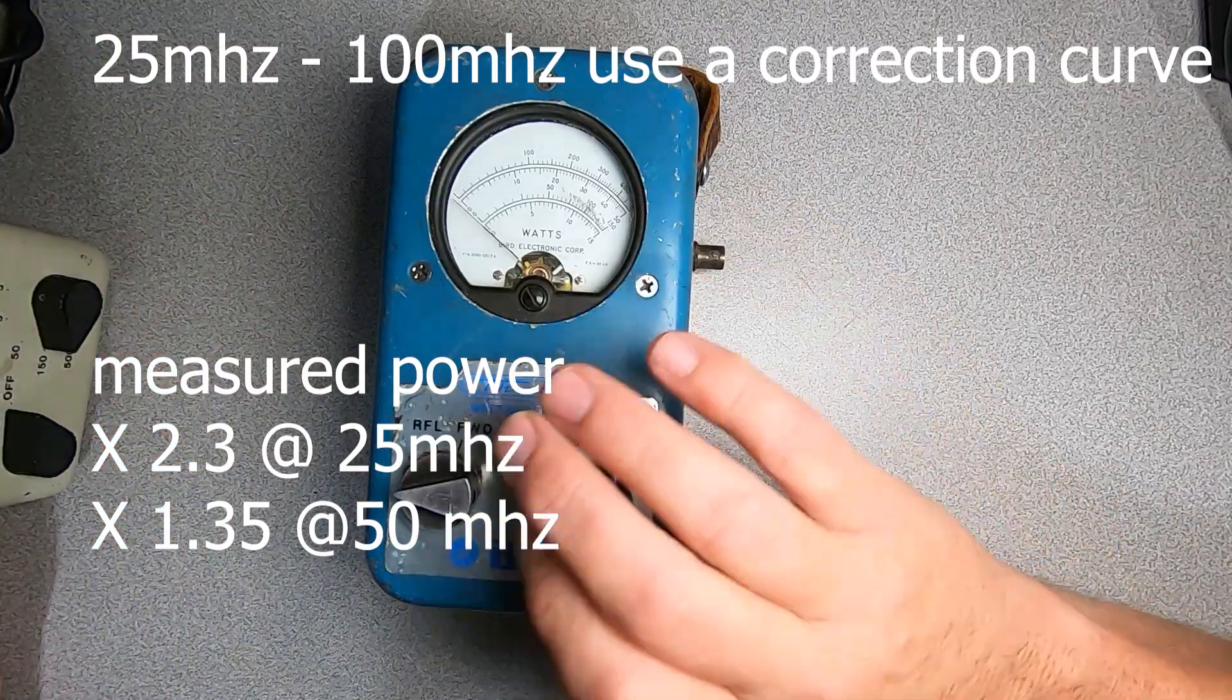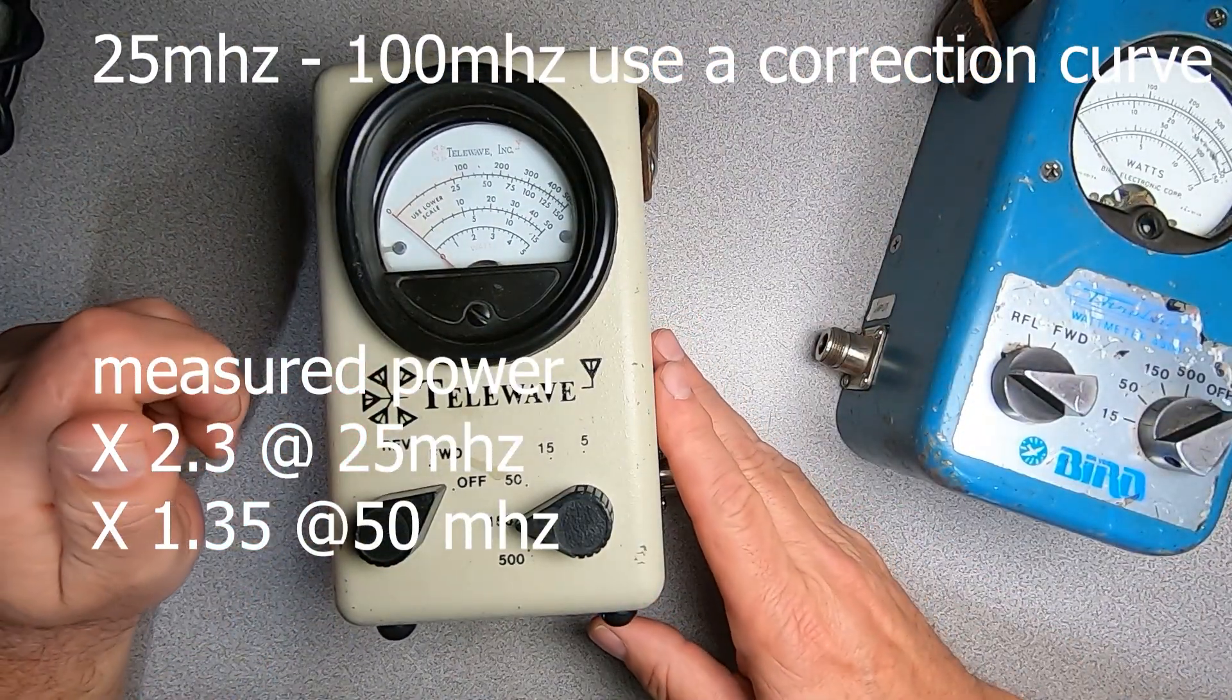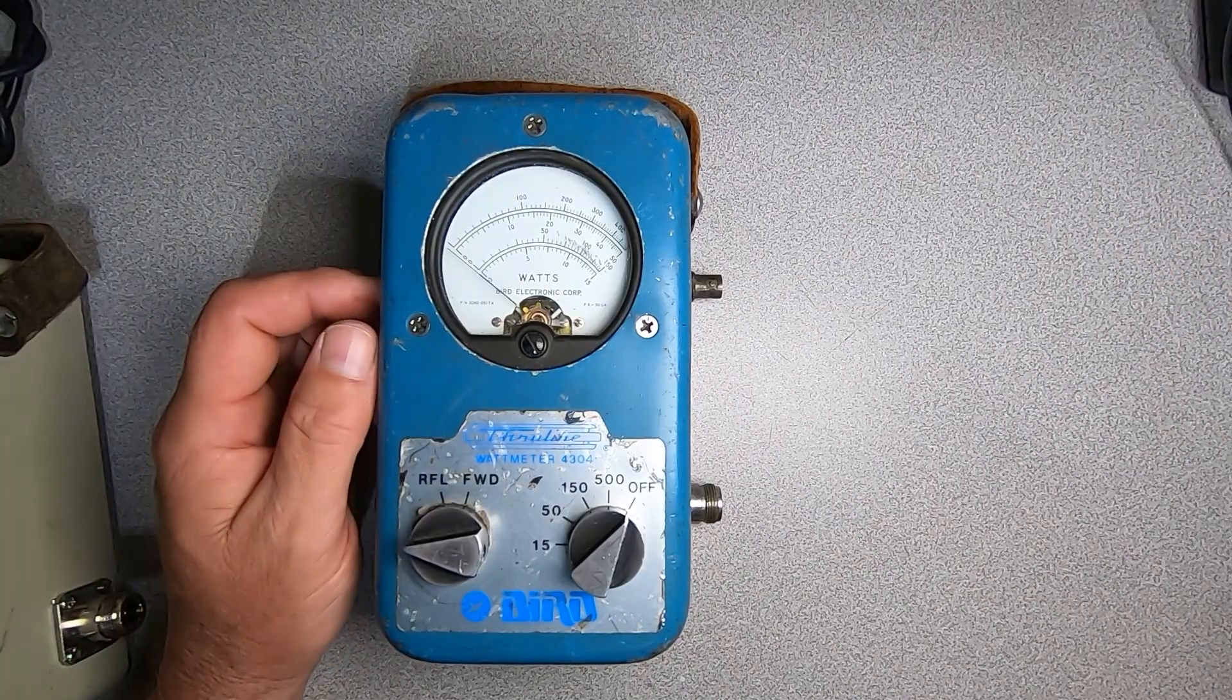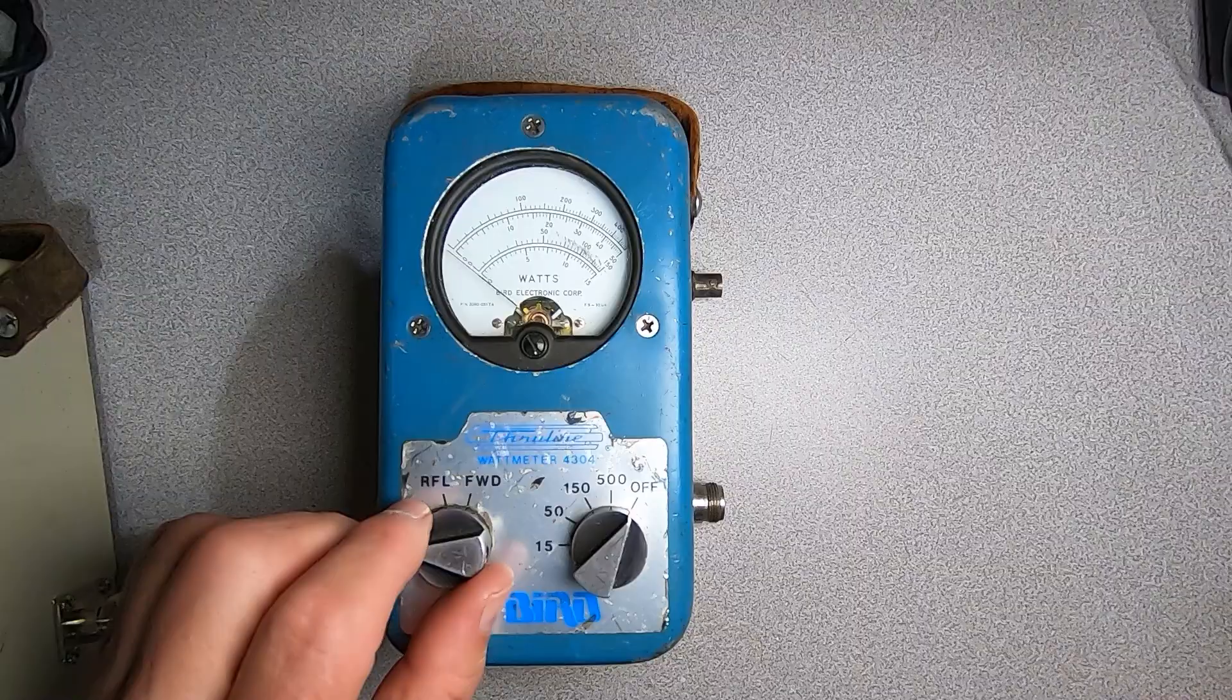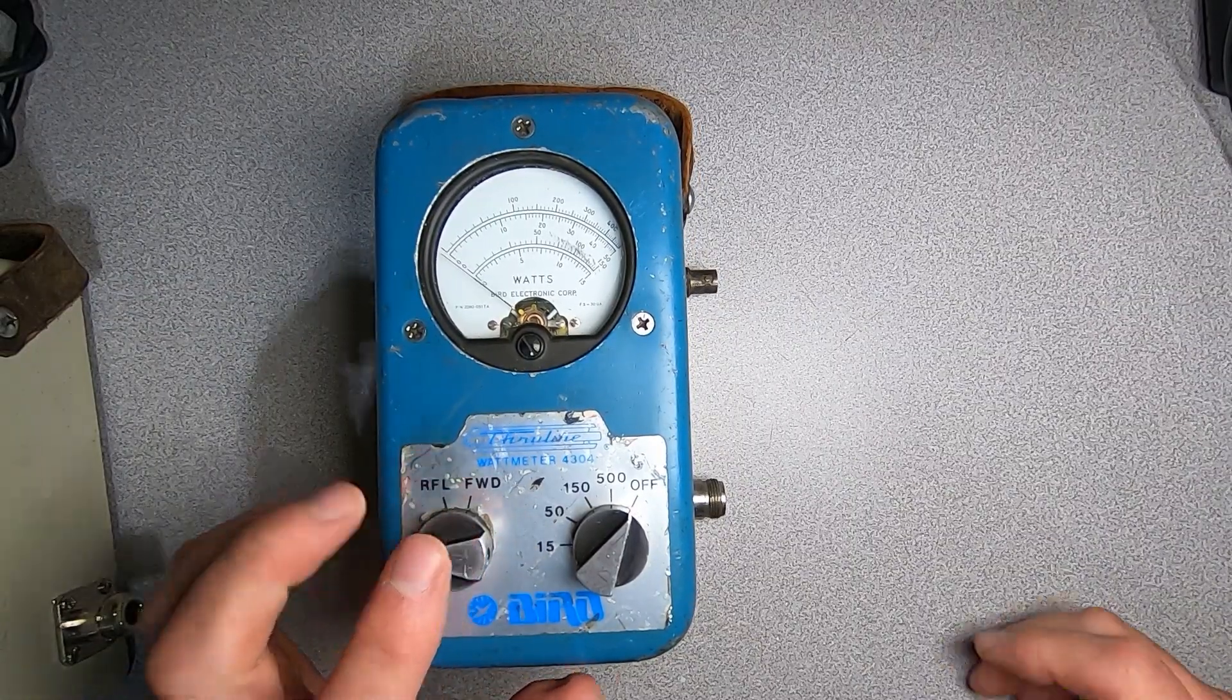Now this is much like my Telewave 44A meter as shown here. It's easy to see that our meter is a bit worse for wear and the directional switch is completely inoperable, so we're going to take it apart and see if we can address that.